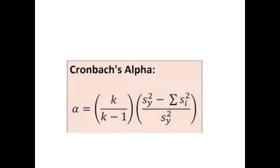The Cronbach's Alpha formula is: Alpha = (k / (k − 1)) × (S_y² − Σs_i²) / S_y², where k is the number of items, S_y² is the total variance, and Σs_i² is the sum of item variances. This is the formula for calculating Cronbach's Alpha.